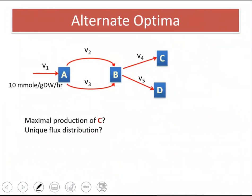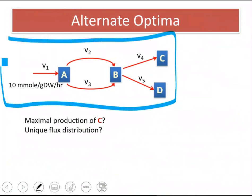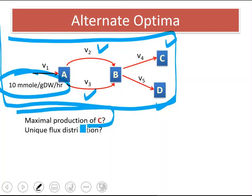A visual example on this alternate optima to better demonstrate the related problem. Let's say we have a very simple system. A goes to B via two alternative reactions and B goes to C and D and we know that A is taken up by this simple cell with a rate of 10 millimole per gram dry weight per hour. And the question is, what is the maximum production rate of C in this case?